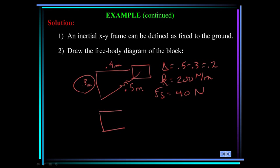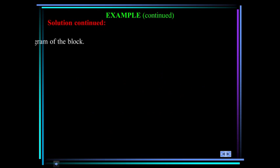And k is 200 newtons per meter. So the force in the spring is 40 newtons. So the free body diagram would look like this. The horizontal force of 100 newtons. The spring force of 40 newtons at an angle of 3 on 4. Remember, they set a smooth surface, so there is no frictional force. And the kinetic diagram is very simple. It is m times acceleration in the horizontal direction.